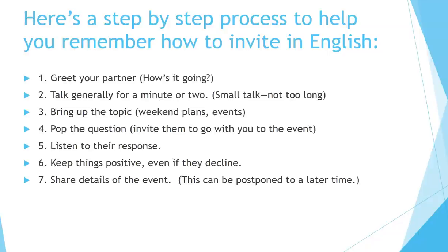Here's a step-by-step process to help you remember how to invite in English. 1. Greet your partner — say something like 'How's it going?' 2. Talk generally for a minute or two. Small talk is just that — small talk. It should not be too long. 3. Bring up the topic: weekend plans, upcoming events, or things like that. 4. Pop the question — invite them to go with you to the event. 5. Listen to their response. 6. Keep things positive, even if they decline the invitation. 7. Share the details of the event — this can be postponed to a later time.